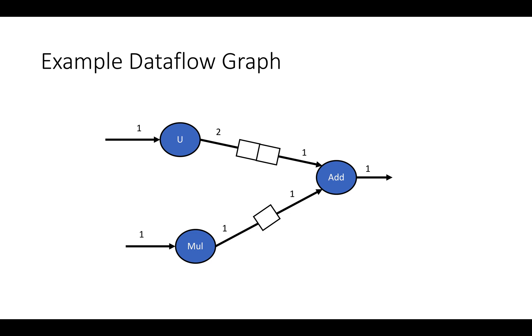Here's a simple data flow graph where we have three nodes: one is labeled U and it's an upsample, one is a multiply, and one is an add. Each edge in this graph is annotated with numbers which indicate how many tokens or pieces of data have to be sitting on that edge in order for the corresponding receiving node to fire. The outgoing edges are also labeled with a number that indicates how much data is produced by the node that's firing.